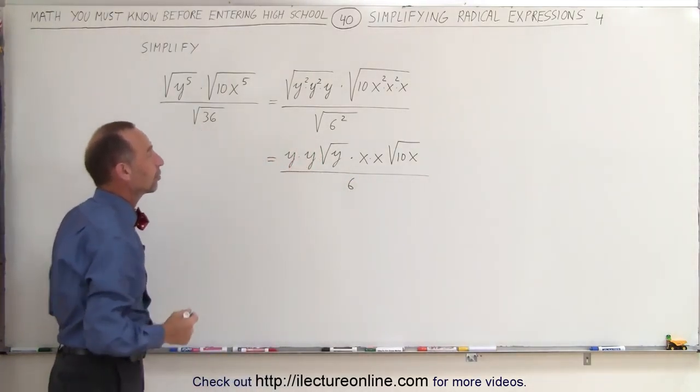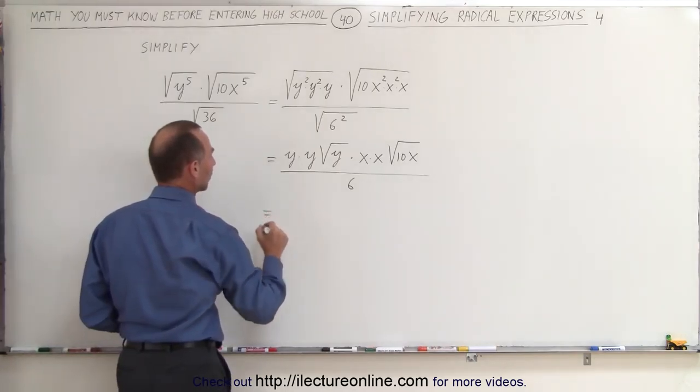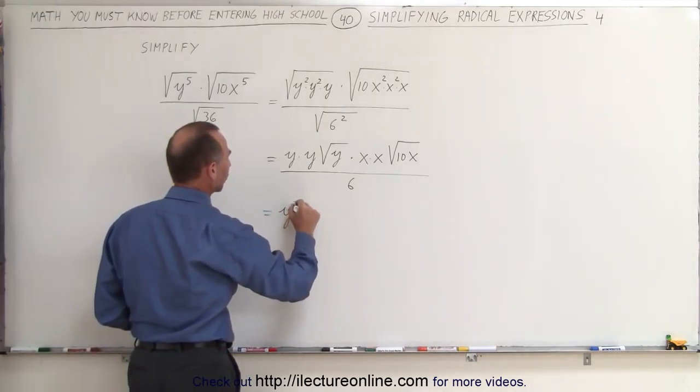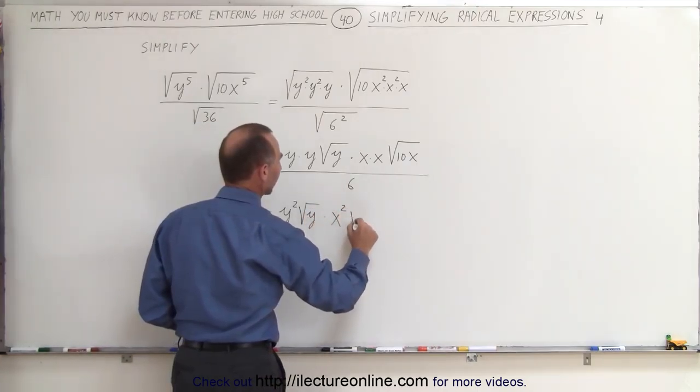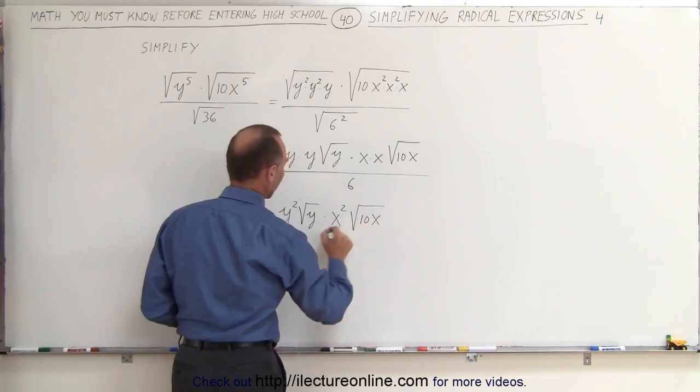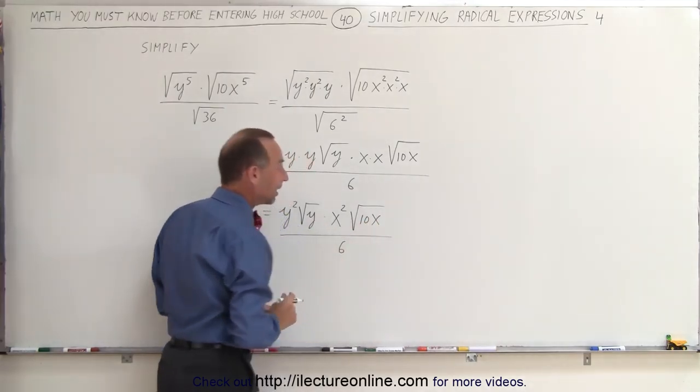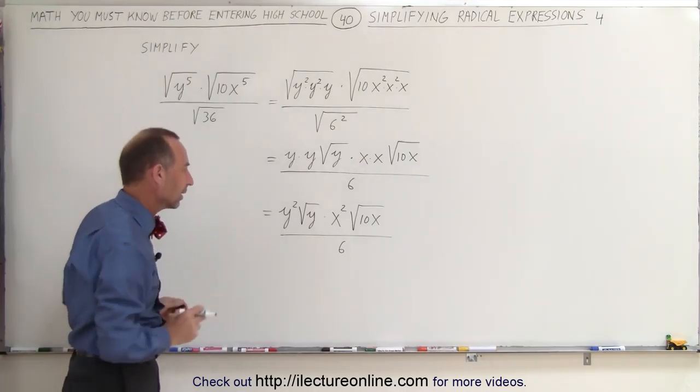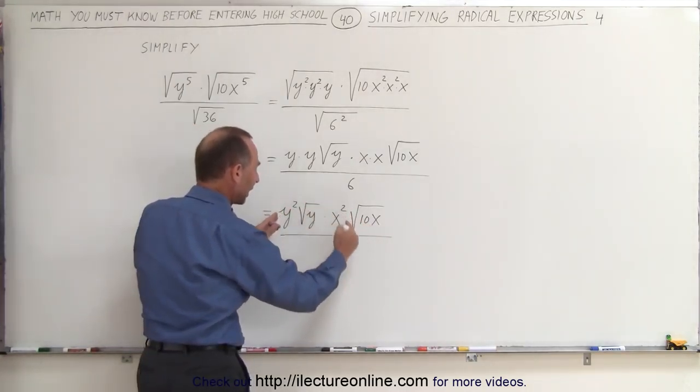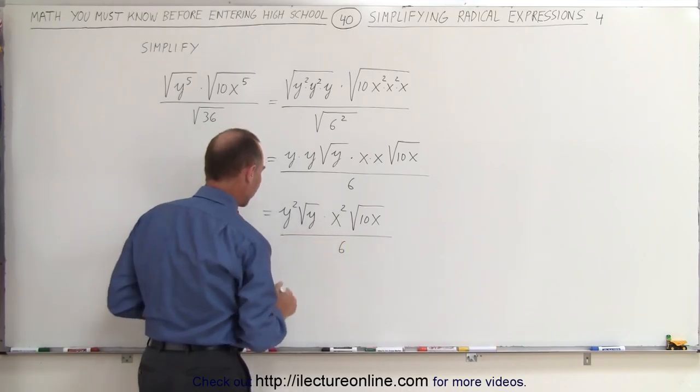Now we can combine like terms. This equals y squared times the square root of y times x squared times the square root of 10x divided by 6. When combining like terms, we can group y squared, x squared, and 6.